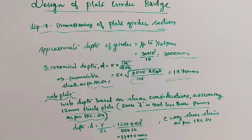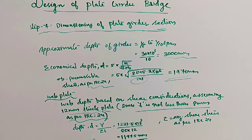The thickness T is not less than 8 mm as per IRC 24. So here, assume thickness 12 mm. Then depth D equals V divided by tau times T.